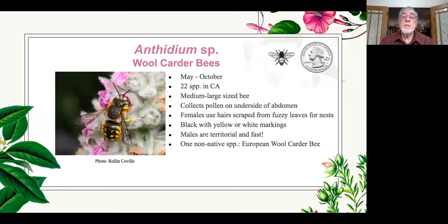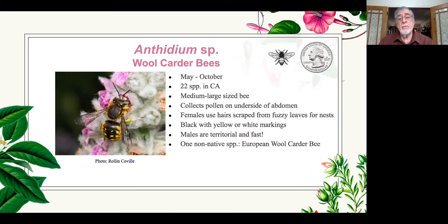This is the Anthidium species, the wool carder bee. This bee is very common in gardens and has been introduced from Europe. It's really interesting because it chases all the other bees, and if you get too close, some of my students claim they've been hit in the forehead by it — it just bounces off. But this bee is very territorial: it's setting up territories, hoping to interact with a female. Right now I have them in my backyard on foxglove, chasing every bee that comes in except when a female arrives.